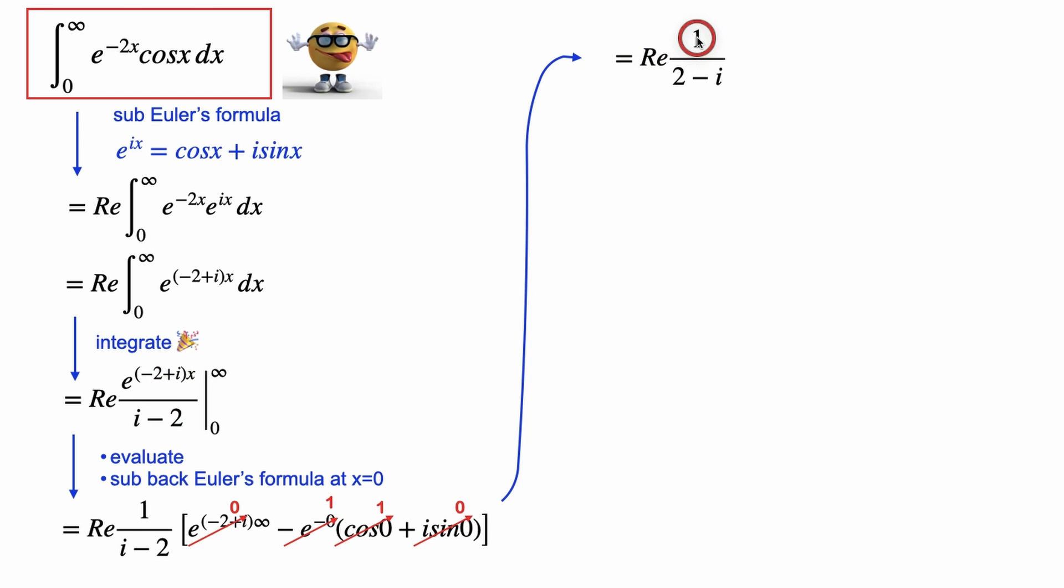So this becomes the real part of 1 divided by 2 minus i. Now this is 2 minus i here, rather than i minus 2. So I swapped the denominator because of the negative 1. This is negative 1, and I brought the negative down into the denominator, which swapped it.